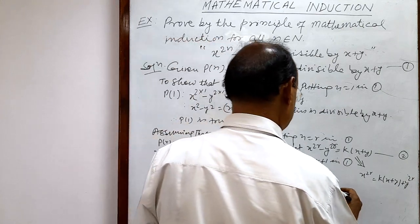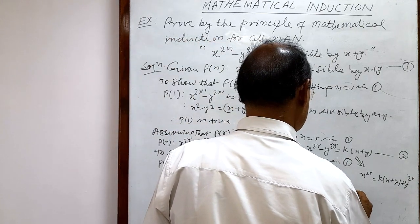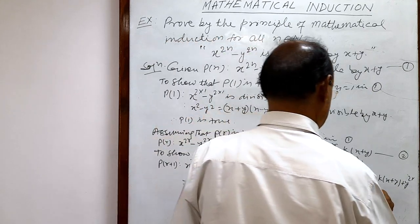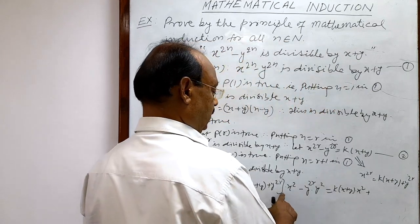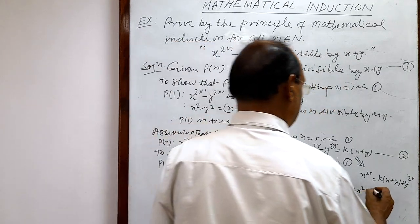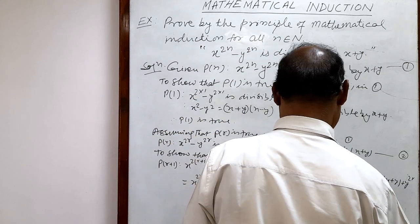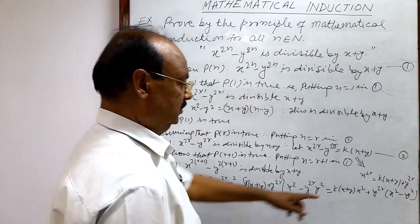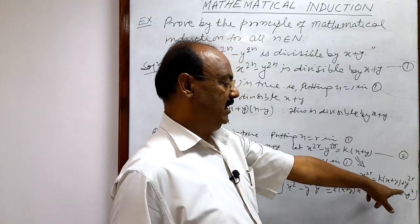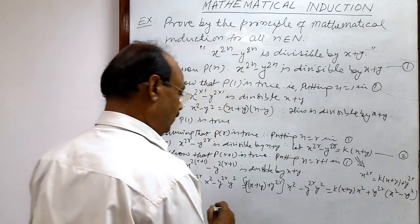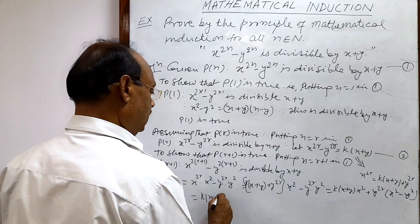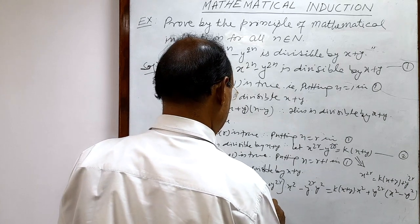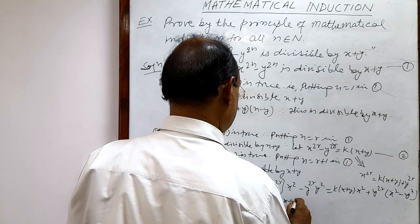Simplifying further, this becomes k times x plus y times x squared, plus y to the power 2r times x squared minus y squared. Taking y to the power 2r as common from the last two terms and noting that x squared minus y squared equals x plus y times x minus y, we get k times x plus y times x squared plus y to the power 2r times x plus y times x minus y.